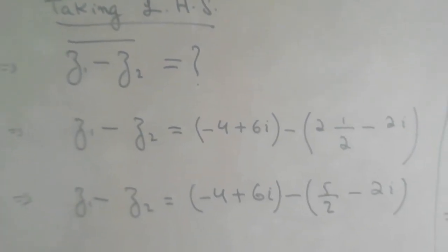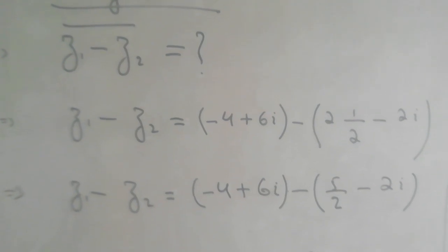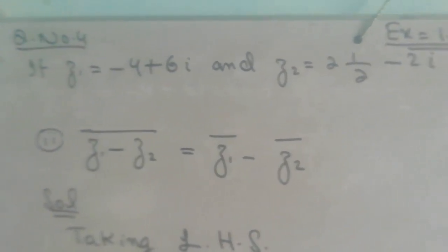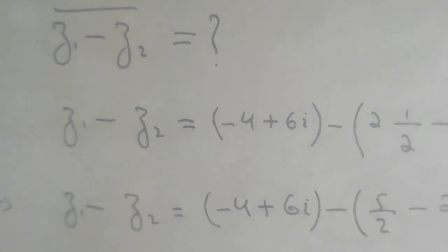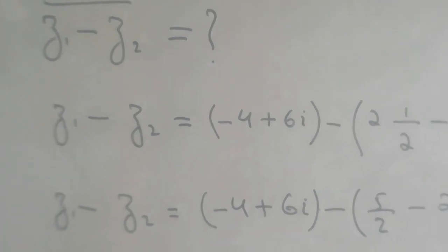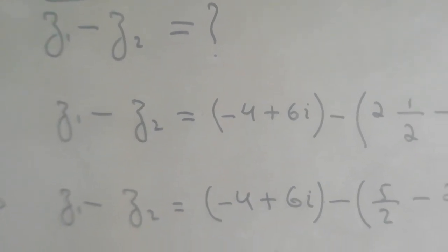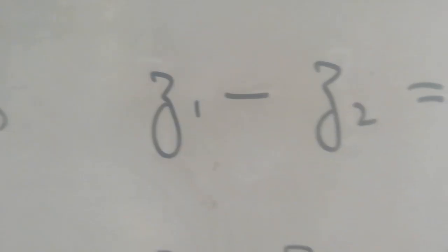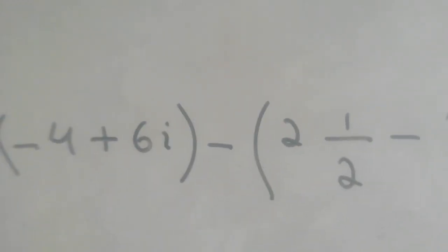So z1 minus z2: I put up z1 value which is minus 4 plus 6 iota, and then there is a minus symbol with a bracket for z2.